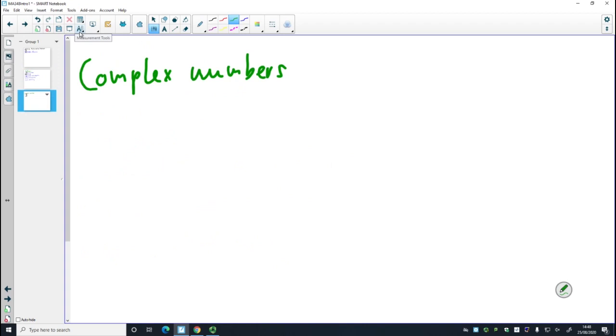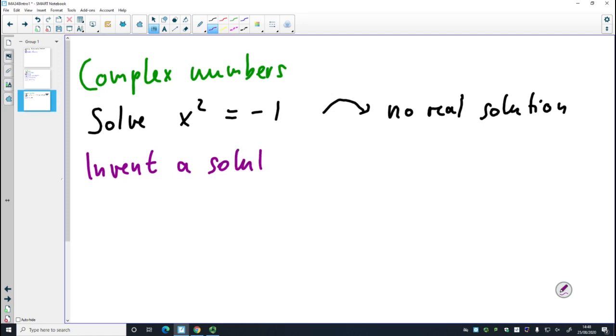Complex numbers. Some of you might have met complex numbers before. We're going to introduce them in detail, but for the moment, I want to solve x² = -1. This looks a bit funny because if I take a positive number and square it, it's still positive. If I take a negative number and square it, it will be positive. So there's no solution. But I can invent a solution, and I call this i.